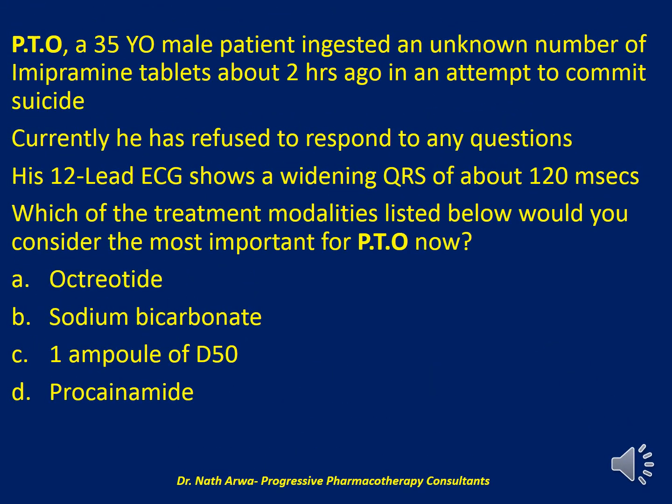The next question reads: Mr. PTO, a 35-year-old male patient, ingested an unknown amount of imipramine tablets about two hours ago in an attempt to commit suicide. Currently, he has refused to respond to any questions. His 12-lead EKG shows a widening QRS interval of about 120 milliseconds. Which of the treatment modalities listed below would you consider the most important? Would you administer octreotide, infuse sodium bicarbonate, administer one ampoule of 50% dextrose in water, or administer procainamide? I'll give you 10 seconds.